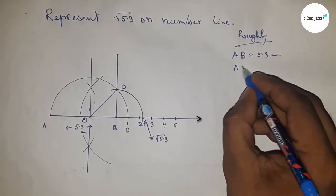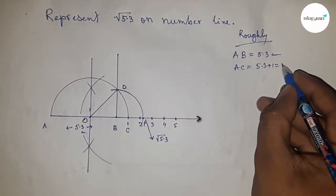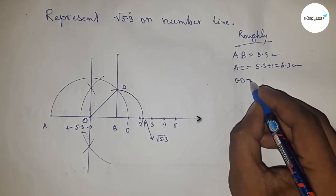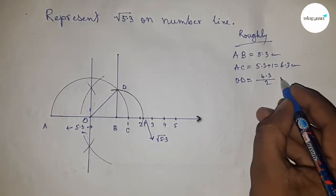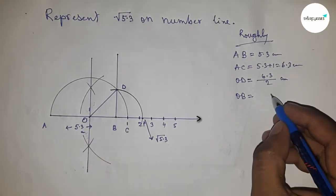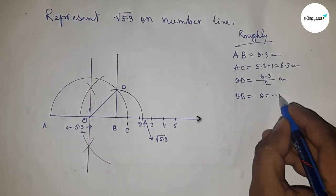AB equals 5.3. AC equals 5.3 plus 1 centimeter, equals 6.3 centimeters. From this we can see that the radius OA or OD equals 6.3 by 2. Next, finding the length OB, so subtracting OC minus BC: 6.3 by 2 minus 1.